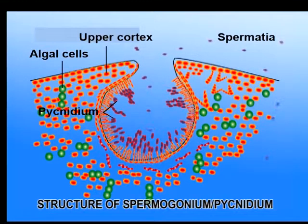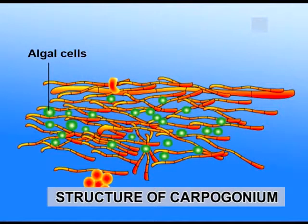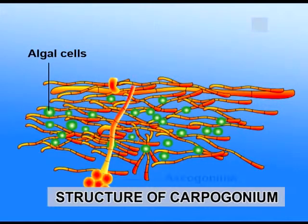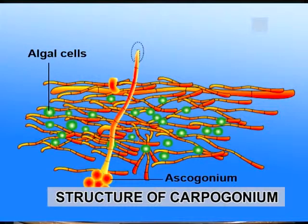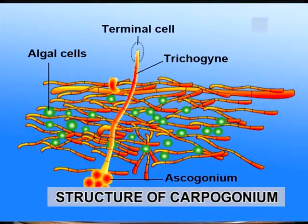Spermatia are non-motile and are produced in large numbers in each receptacle. The spermatia are set free in a slimy mass which oozes out through the ostiole. The carpogonium is a special cellular filament consisting of two portions: the lower coiled portion called the ascogonium, and the upper straight portion called the trichogyne. The ascogonium lies deep in the medullary region of the thallus. The terminal portion of the trichogyne ends in a long cell which projects beyond the surface of the thallus and has a gelatinous cell wall.